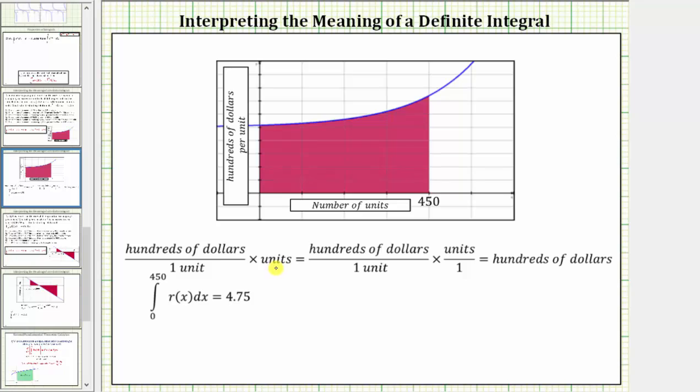If we write units as a fraction with the denominator of one, we can see that these units simplify out or simplify to one, leaving us with the units of hundreds of dollars, which means the 4.75 represents 4.75 hundred dollars.